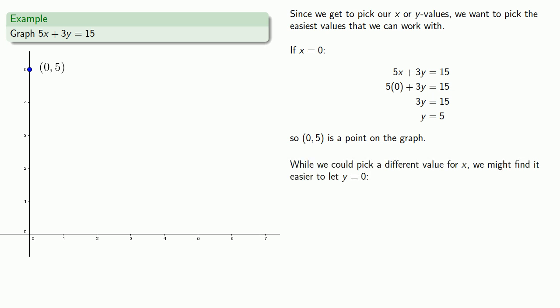While we could pick a different value for x and solve for y, we might find it a little bit easier to let y equals 0. So, we'll let y equals 0 and substitute that value into our equation and then solve for x. And if we do that, we find that 3, 0 is also a point on the graph. And because we know that this graph will produce a straight line, we'll draw the straight line running between these two points.